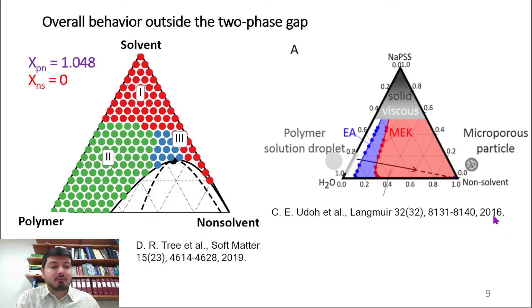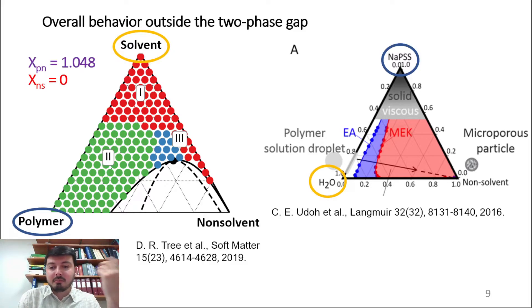After that, we looked at some experimental work on microporous particles and noticed that the type of solvents that were used resulted in huge phase gaps compared to ours. They also might have some interaction between the two solvents. We wanted to make our phase gap bigger in order to have better comparison to the experimental work. How do you increase the size of the phase gap? One might think: increase the binary interaction between the polymer and the non-solvent.